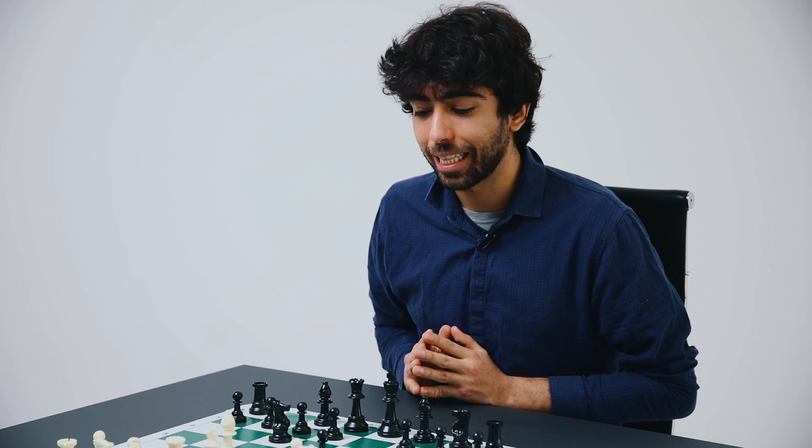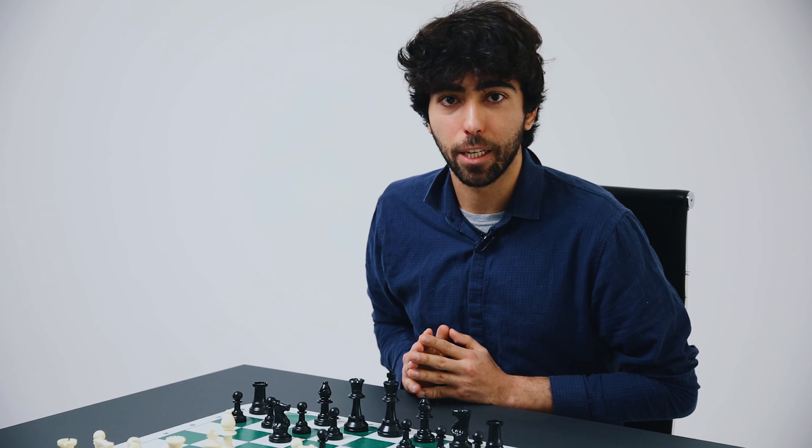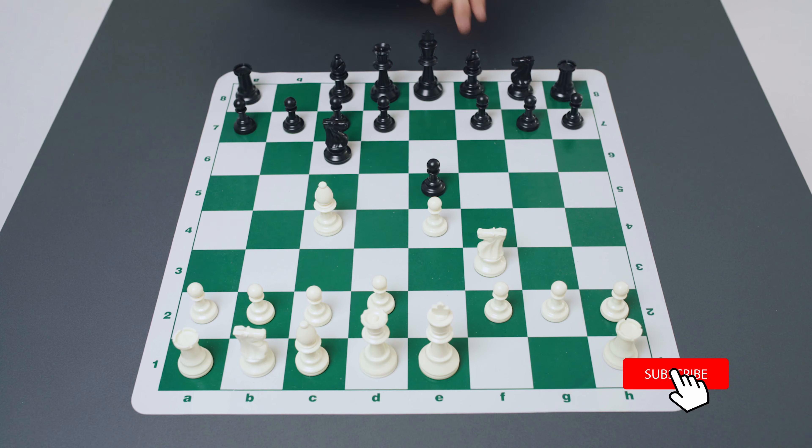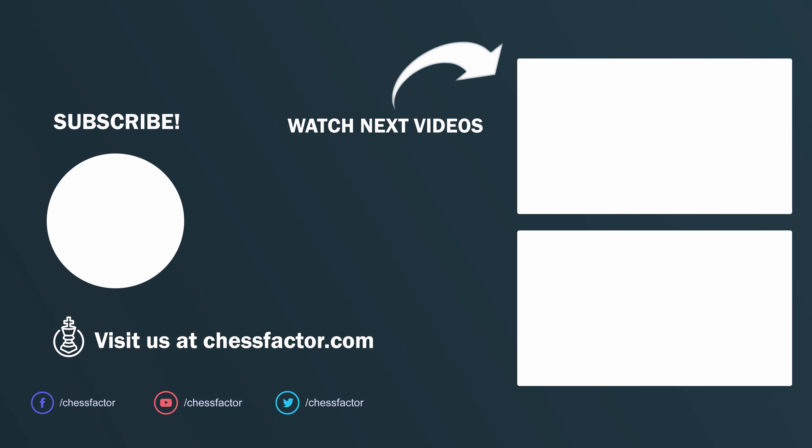f5 is the Rousseau Gambit, and we have h6, this move is the so-called anti-fried liver defense to protect g5, and we even have the move knight to d4, which offers this pawn on e5 and this is known as the Schilling hostage gambit or the Blackburne Schilling gambit.